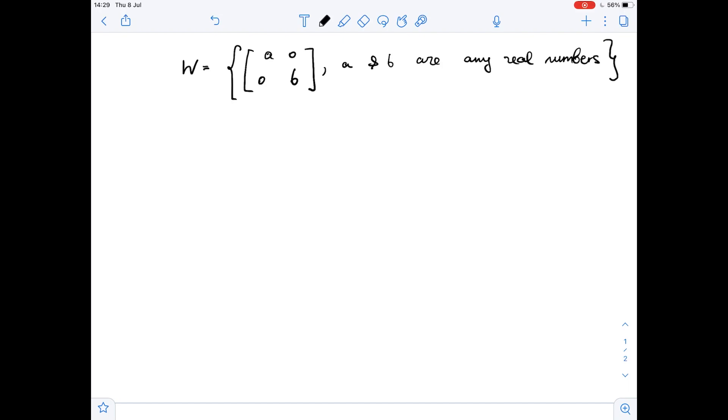Then let E be the basis for W. In this case, the matrix [a 0; 0 b] equals a times [1 0; 0 0] plus b times [0 0; 0 1].